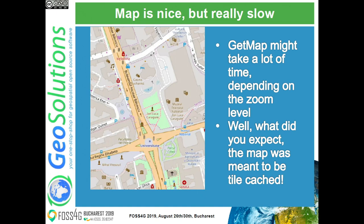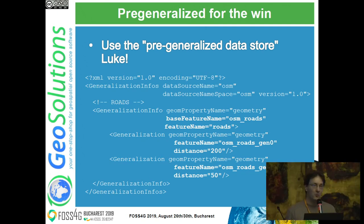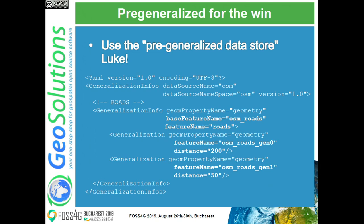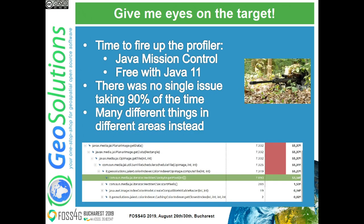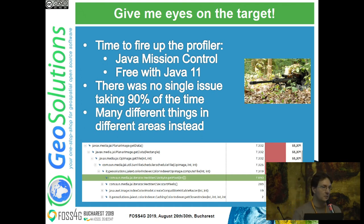Then we found the map was still really slow to render. You might say 'well, this was meant to be tile-cached, not rendered on the fly' - but I expected more. imposm3 generates pre-generalized tables with overviews of roads using fewer points in the geometries. I started leveraging them with the pre-generalized data store, where you can say 'between this scale denominator and that one, use this table' - using more and more simplified geometries at lower zoom levels. That was a win, but not enough. So I needed eyes on the target: I used Java Mission Control, started a profiling session loading GeoServer with map generation, and found there was no single place taking most of the time - it was a bunch of things.